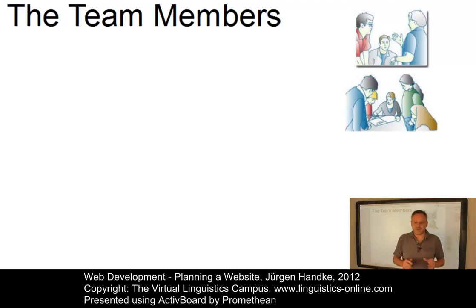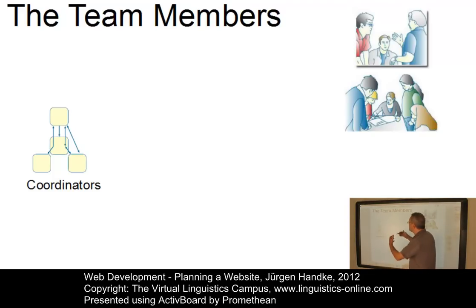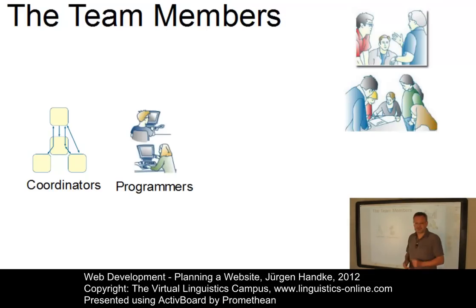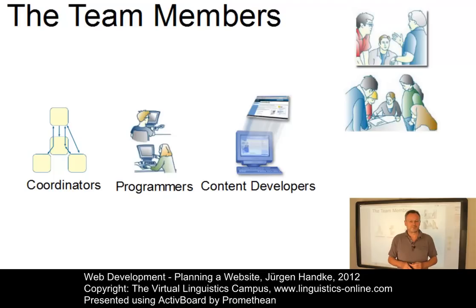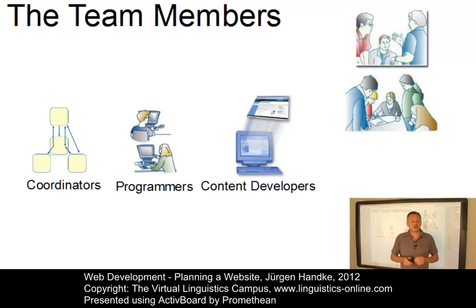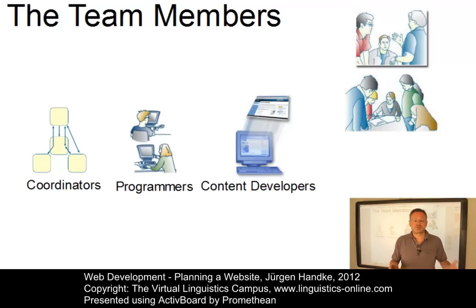The following experts are part of a website production team. First of all, you need team members whose primary task is coordination. Website development certainly involves a group of programmers. And then you need a unit within your website team — a group of experts dealing with the content of the site. Since some of the responsibilities of these roles overlap, it is possible, and in smaller teams even necessary, that one member covers several fields of web development. In fact, this is the case in most teams, which normally consist of 5 to 10 people.